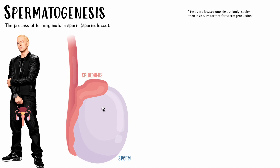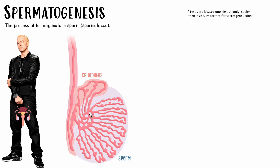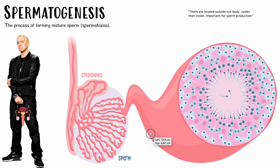So now let's slice open this testes and see exactly where sperm is made. We can see there are a lot of little pipes, wiggling and waggling. We call these little pipes seminiferous tubules. Now we're zooming into one pipe, slicing it open and seeing what's going on inside. Look at all those cells!